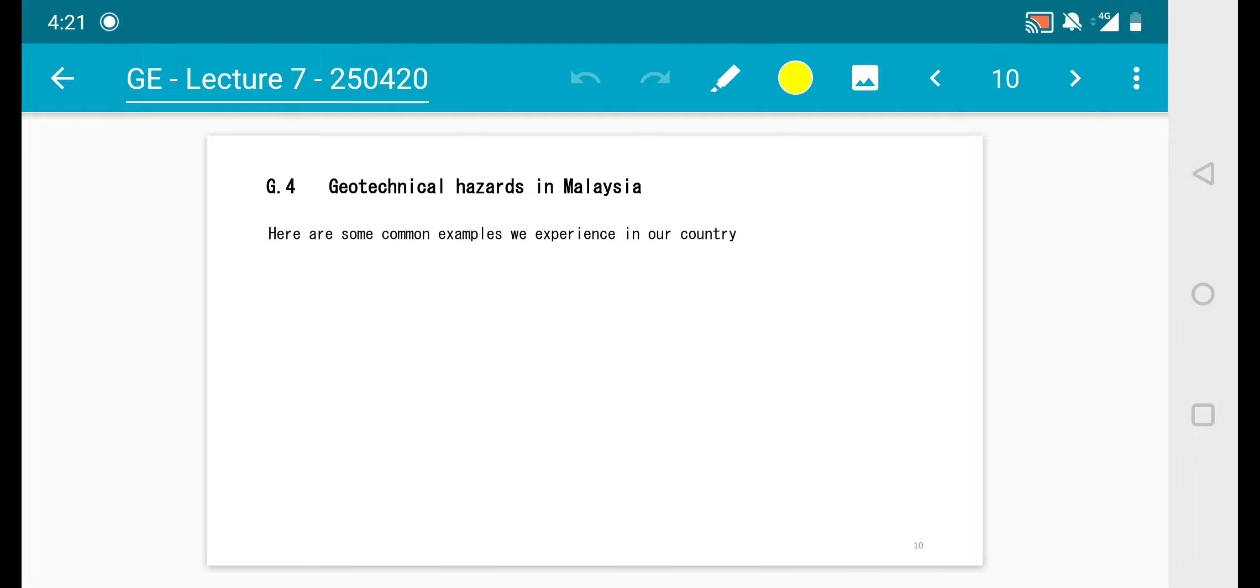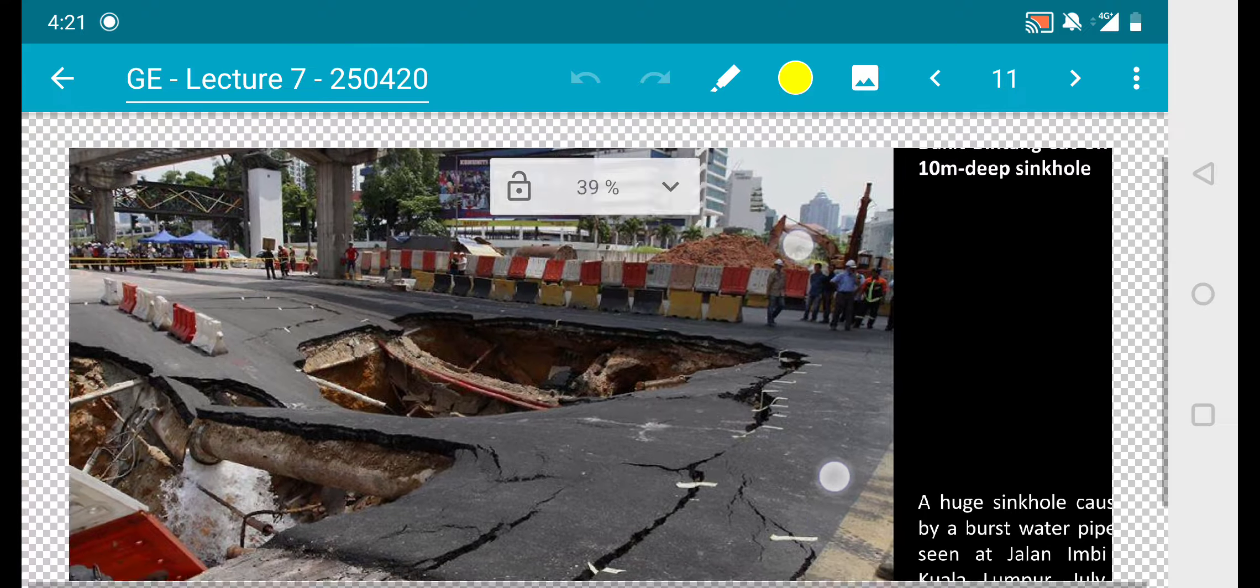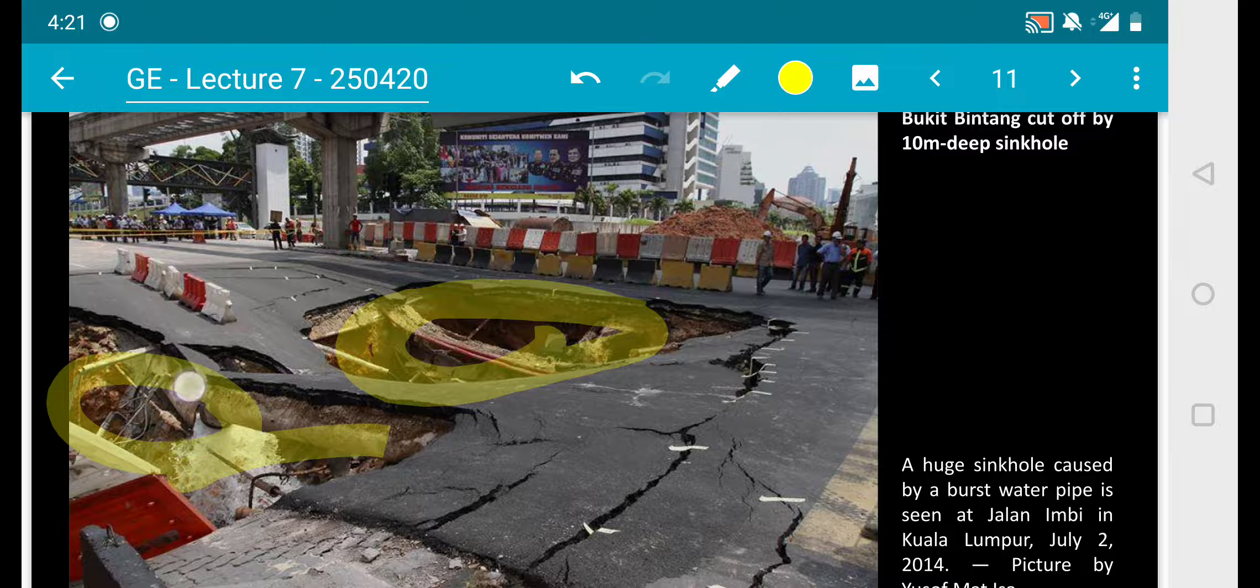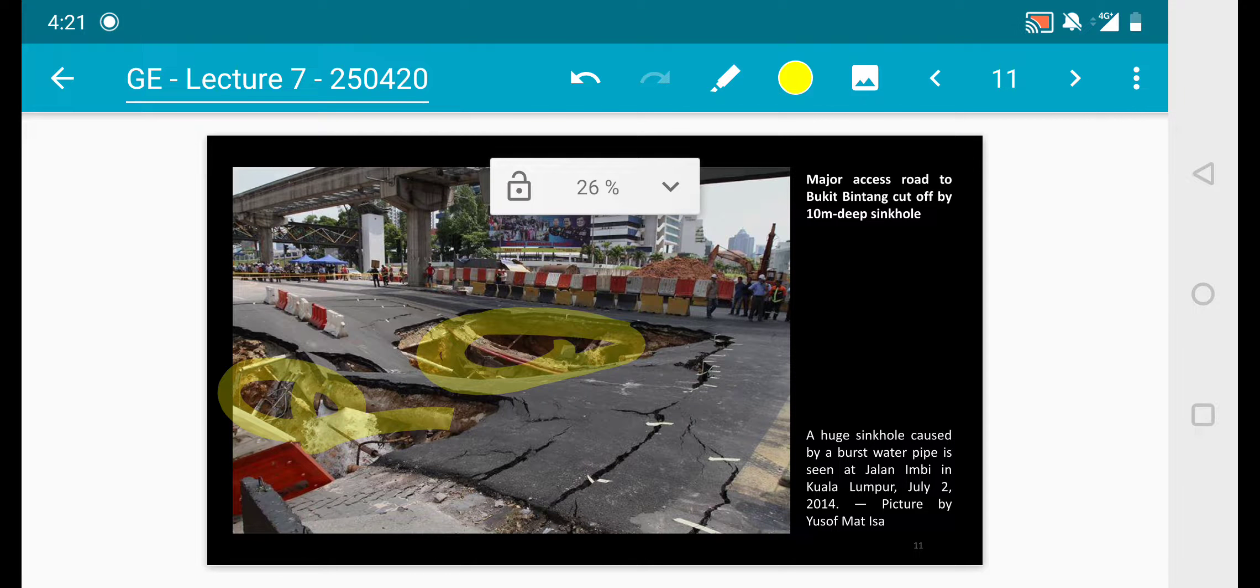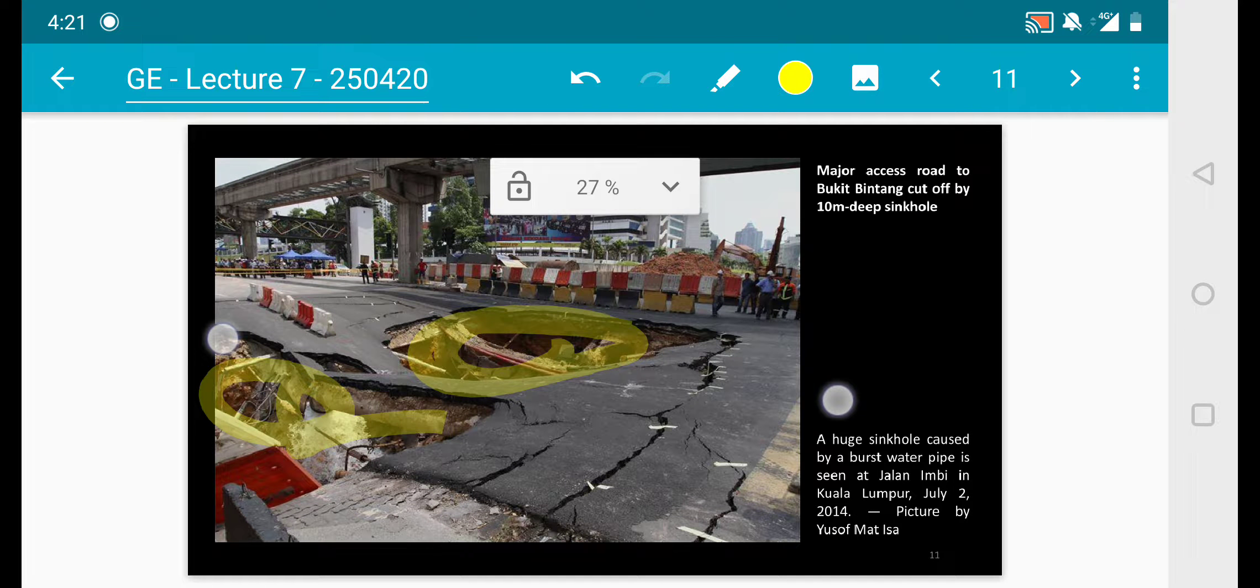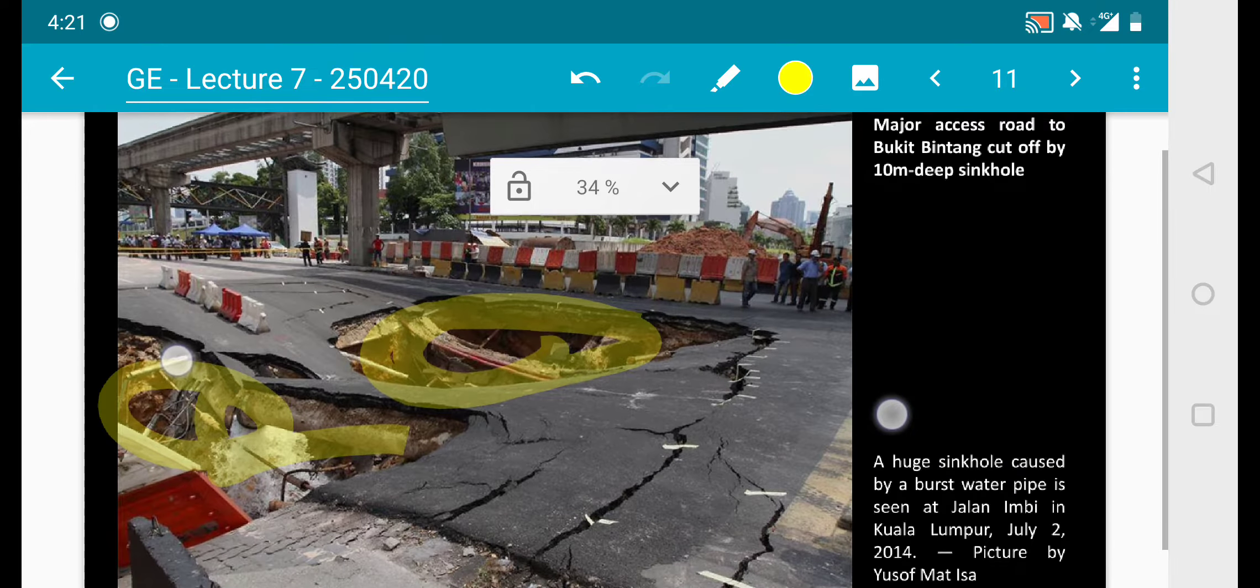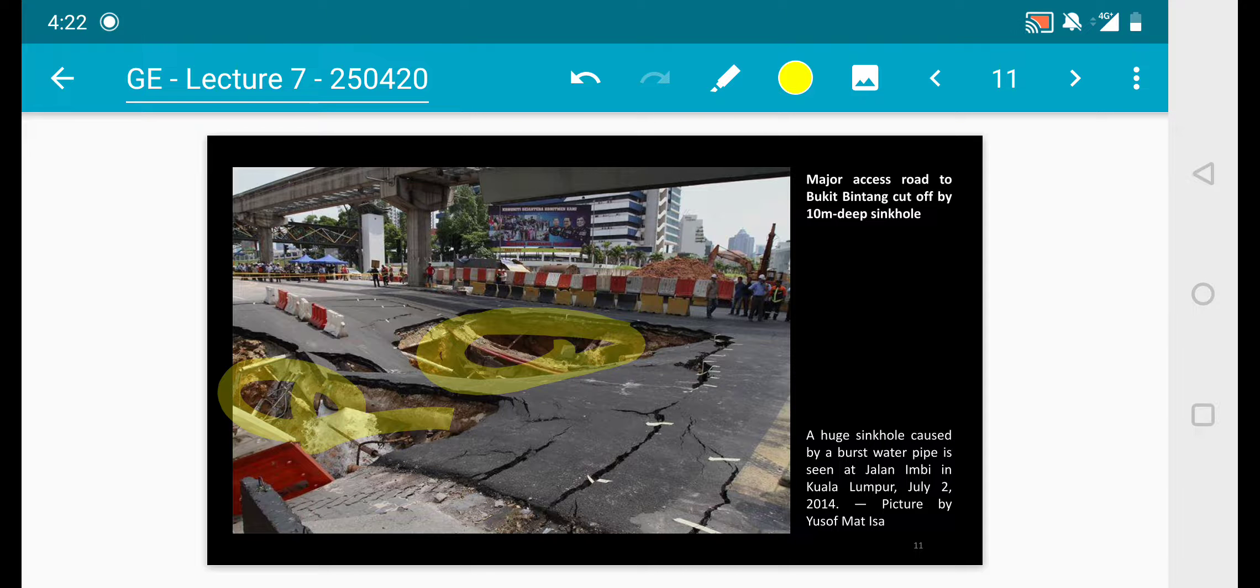Let's move on to geotechnical hazards in Malaysia. I picked up some newspaper cuttings for us to discuss about hazards happening in our local settings. The first one would be on this sinkhole. This is caused by a burst water pipe along Jalan Imbi in the city center back in 2014, July 2. The consequences is of course a major roadblock because this is where all the vehicles keep coming in and out of the city center. This is one of the geotechnical hazards that occurs in our local setting.